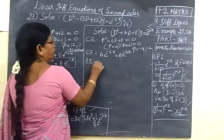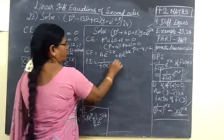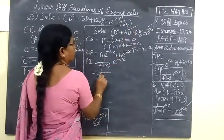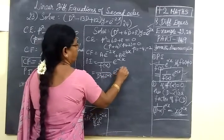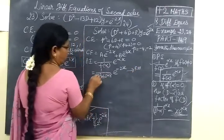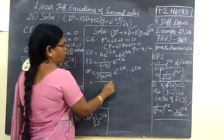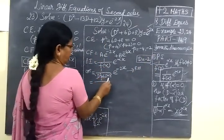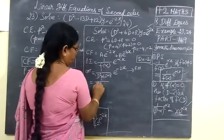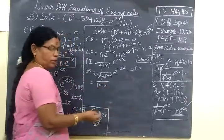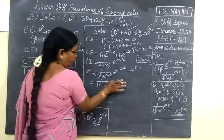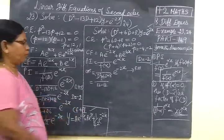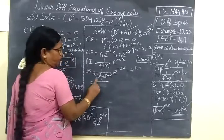Next we have to find the particular integral. Our formula is 1 by f of alpha, e power alpha x. So 1 by f of d is d squared plus 6d plus 8, then e power minus 2x. For d substitute minus 2: minus 2 squared is 4, plus 6 into minus 2 is minus 12, plus 8 equals 0. Since it is 0, we have to split into factors. If it is not equal to 0, you proceed directly. If it is 0, you split into factors.